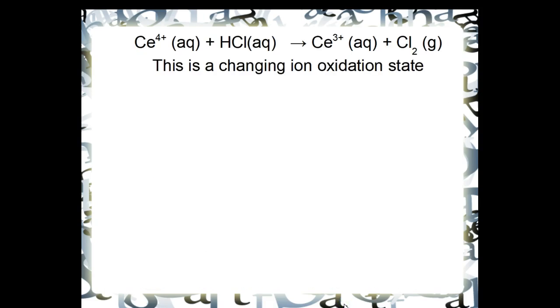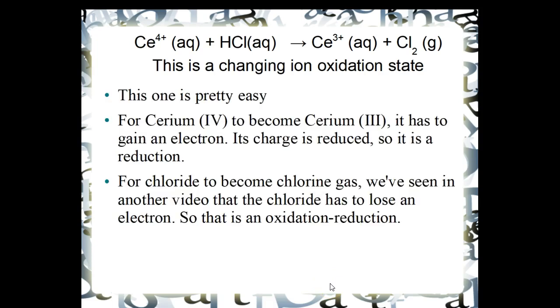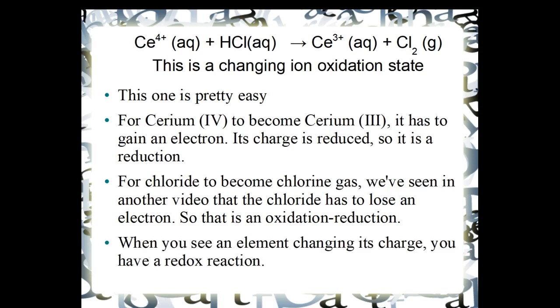The next type of reaction we have sees the cerium four plus ion changing to the cerium three plus ion. So this is a changing ion oxidation state. It's really easy to see that for cerium four to become cerium three, it has to gain an electron. If you're reducing its charge, you are reducing the cerium four to cerium three. For chloride to become chlorine gas, we saw in an earlier video that the chloride has to lose an electron. So that is an oxidation-reduction reaction. When you see an element changing its charge, you know you have an oxidation-reduction reaction.